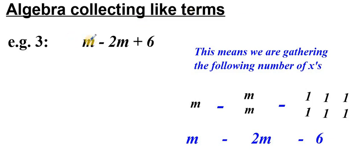In this video, I will demonstrate how we can collect like terms when not all of our terms are like or can be collected. We've got an m term here, another m term, and then a single number. So we can collect up the m terms, but we will not be able to collect the six with that.